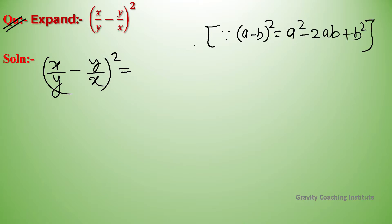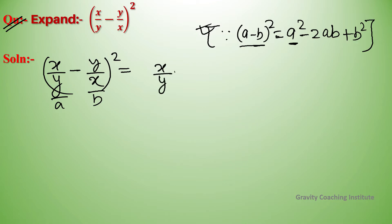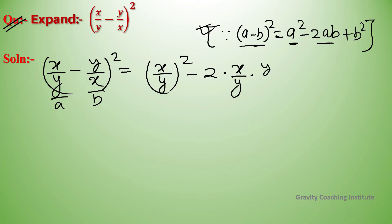According to this formula, suppose a and b. So a minus b whole square equals a square minus 2ab plus b square. In place of a, put x upon y, and in place of b, put y upon x. So we get x upon y whole square minus two into x upon y into y upon x plus y upon x whole square.